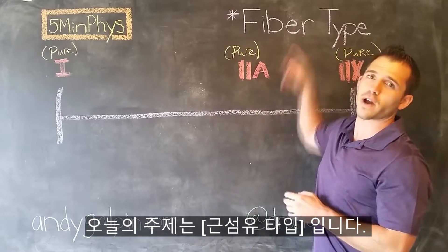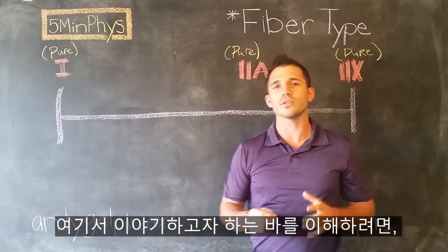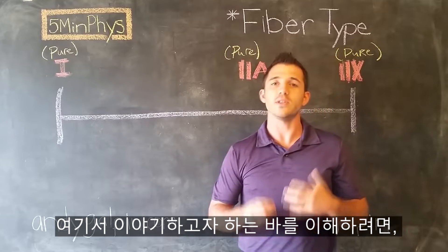Today's topic is muscle fiber types. To understand what we're talking about here, we have to realize that in human skeletal muscle, all of your muscles are made up of a whole bunch of smaller individual muscle fibers.